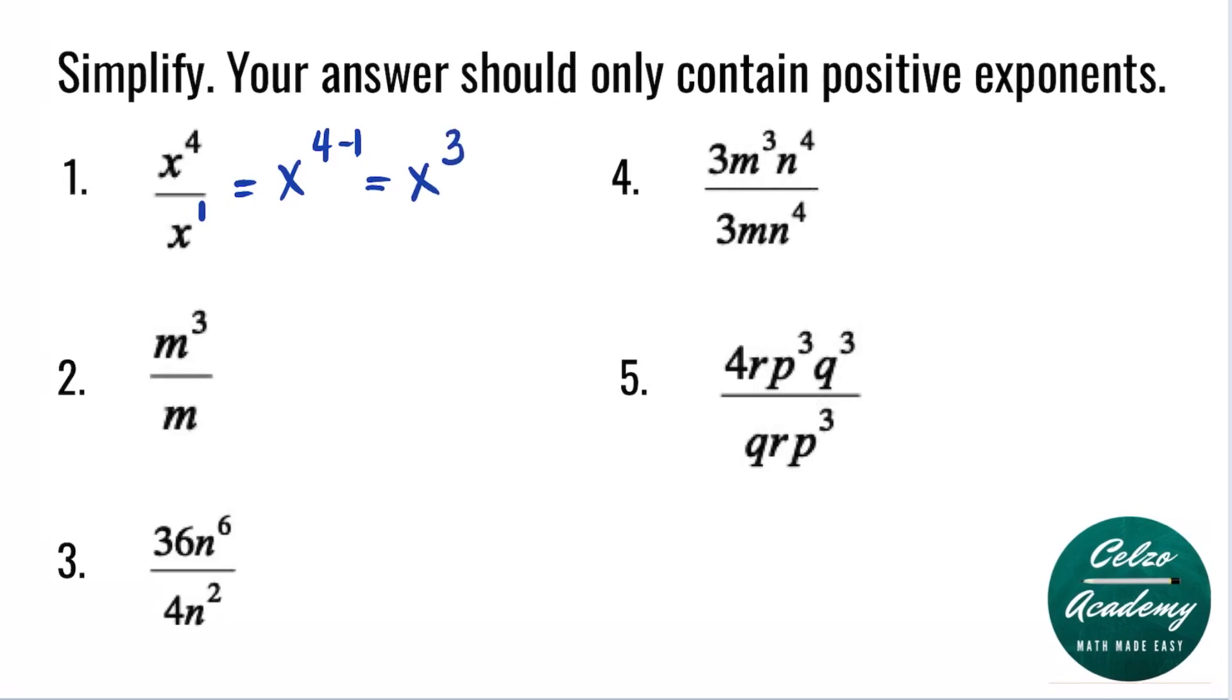Question 2: m cubed over m. This problem is the same thing as m cubed over m to the 1st. According to the quotient rule, we keep the same base m and subtract the powers 3 and 1. So the answer is m squared.